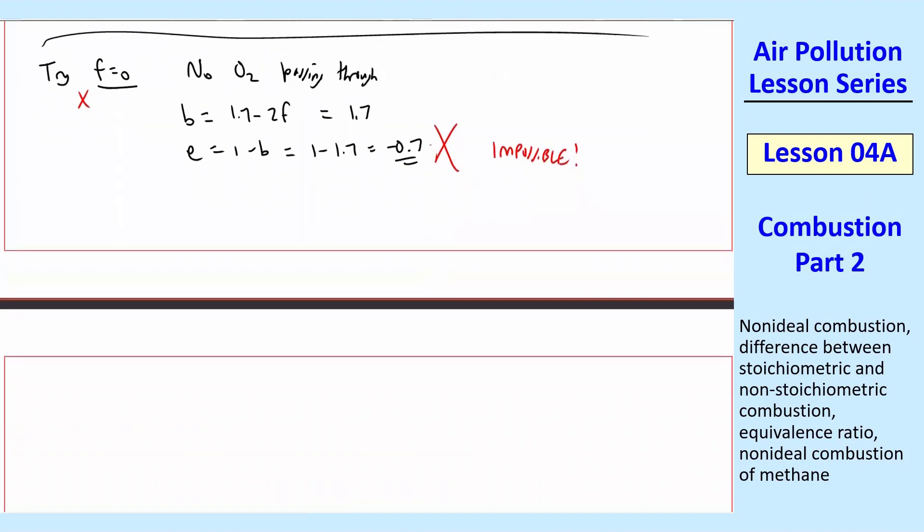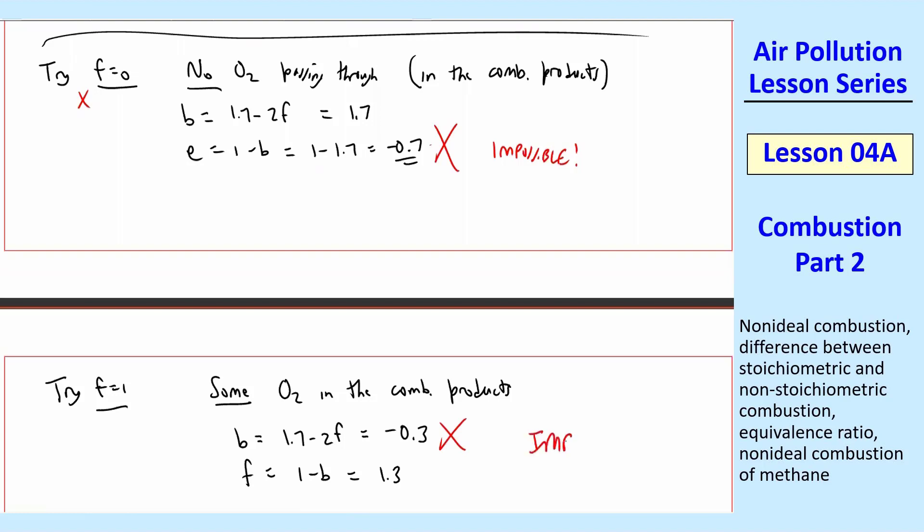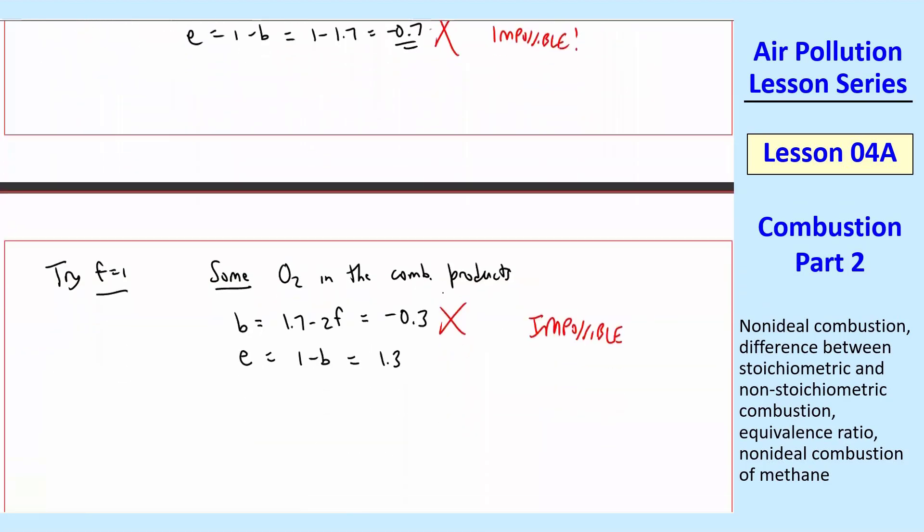And then you can try other cases. Let me do a case for F equal 1. And well, when I go through the math, I find that this time B is negative. So this also is impossible. So in the first case, when F was 0, we had that B was OK, but E was negative. Here we have the opposite. B is negative. And F, that should be an E, not an F. It's OK.